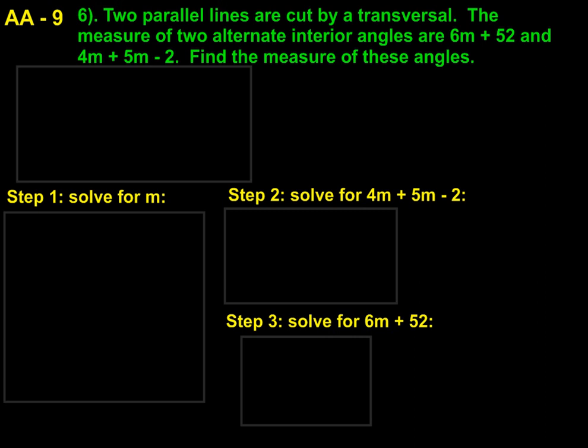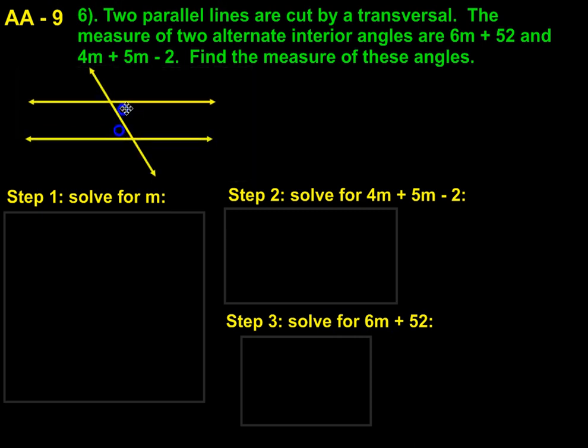Two parallel lines are cut by a transversal. The measure of two alternate interior angles are 6m plus 52 and 4m plus 5m minus 2. We need to find the measure of those two angles. So I did a diagram. And I used the blue circles to highlight which two angles specifically we're focusing on with the alternate interior angles.